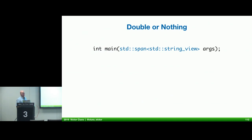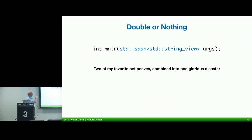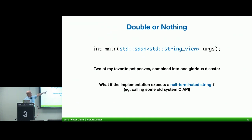Combining two of my favorite pet peeves into one glorious disaster: a span of string_views as arguments to main. From a language standpoint it makes sense; from a practical standpoint it doesn't, because you're most probably going to end up passing one of those arguments to some kind of API that expects a null-terminated string — and StringView doesn't guarantee it's null terminated. And arguments can be modified. So it looks nice on paper but isn't practical in reality.